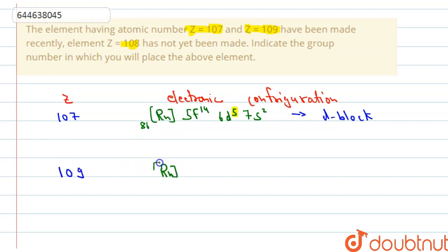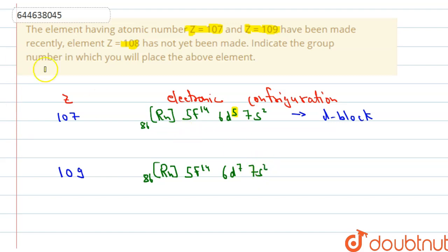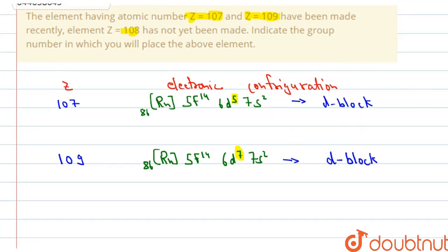For Z=109, the electronic configuration is [Rn] 5f¹⁴ 6d⁷ 7s². Compared to Z=107, there is an increment of two electrons, so the extra electrons go into the d orbital. The last electron is going into the d orbital, so this is also a d-block element.